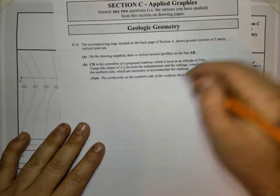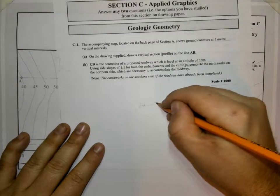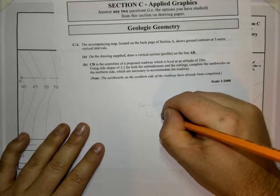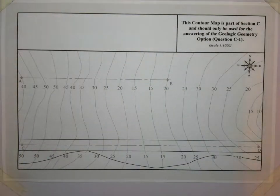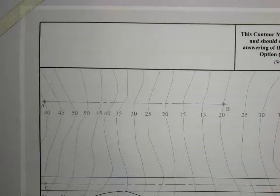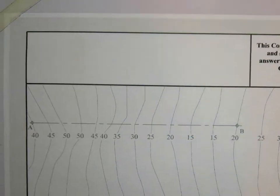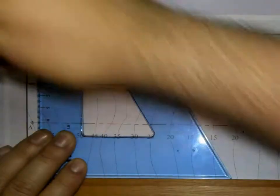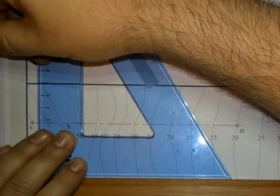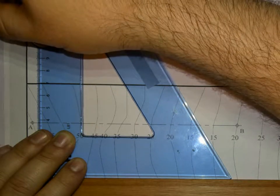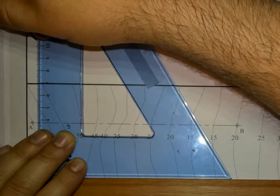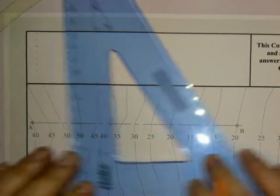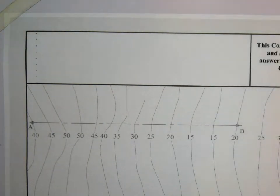Scale is one to a thousand, ground contours at five meter vertical intervals. Five meters equals five millimeters because five thousand millimeters divided by a thousand equals five millimeters. Now if you know what to do here, go ahead and do it. If you have a fair idea, the video won't be here all the time. Mark lines at every five millimeters, and from those points I'm going to draw lines across.